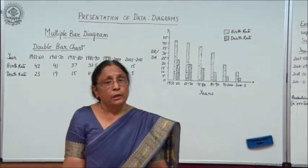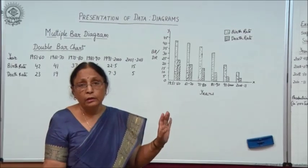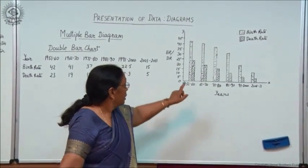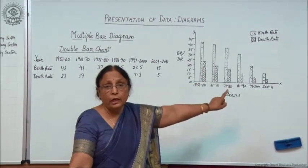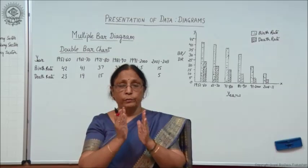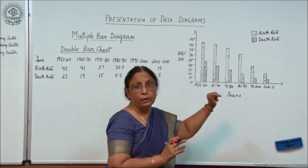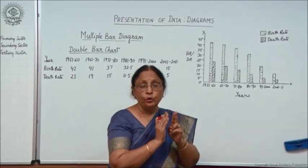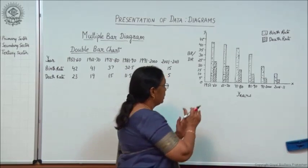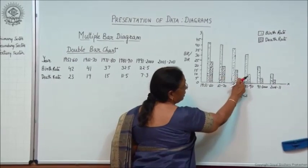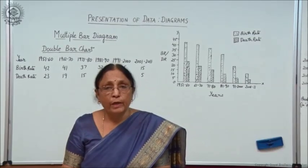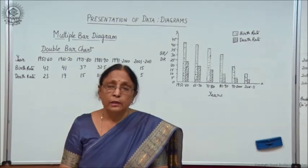Keep certain things in mind when drawing the multiple bar or double bar chart. Two adjacent bars are drawn with no gap in between — the two bars are joined together as one set. But the gap between each set of bars remains the same as in the simple bar diagram — always maintain the same gap.